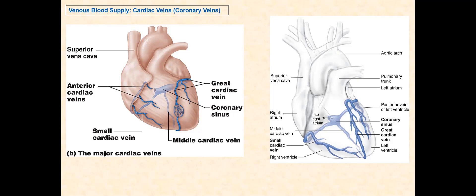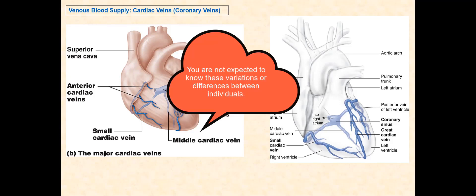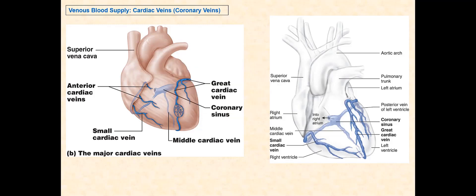One thing to keep in mind: these coronary blood vessels — the coronary arteries and the coronary or cardiac veins — will not always be organized in the way we've discussed. There are differences or variations between individuals. For example, the small cardiac vein is not always present in every individual. In some individuals, the posterior interventricular artery that usually branches off the right coronary artery branches off the circumflex artery instead. Still other veins may empty into another cardiac vein rather than into the coronary sinus, while others empty directly into the right atrium, bypassing the coronary sinus altogether. These variations make each one of us unique.